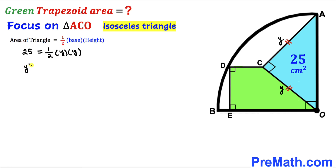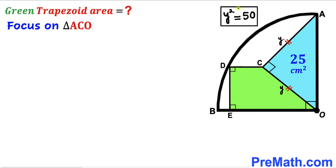Simplifying, we get y² divided by 2 equals 25. Multiplying both sides by 2, the 2s cancel, and we find that y² equals 50.